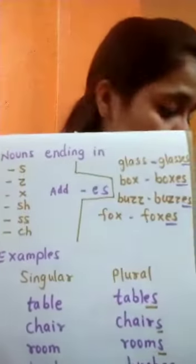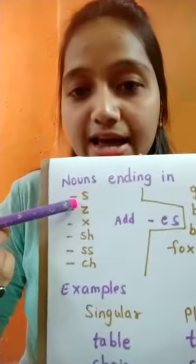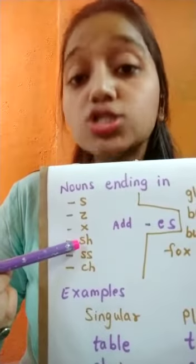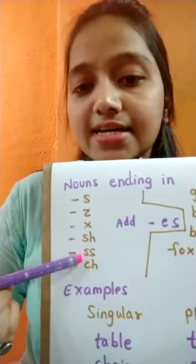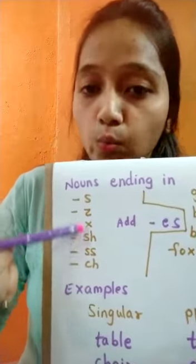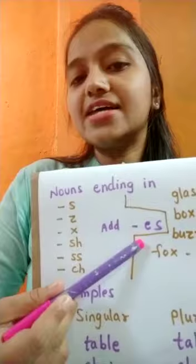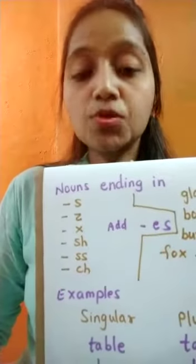Now the second rule. Remember, students — words which end with SS, CH, Z, X, or SH: whenever you see a word ending with these letters, simply add E-S to make the plural noun.